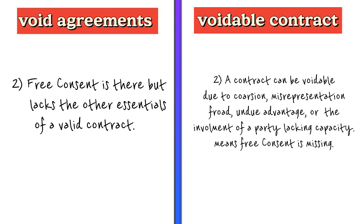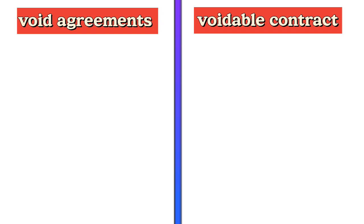On the other hand, a contract can be voidable due to coercion, misrepresentation, fraud, undue influence, or the involvement of a party lacking capacity. This means the free consent is missing in such contracts, which is an essential element of a valid contract.